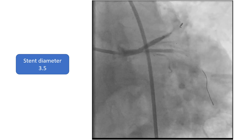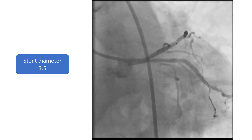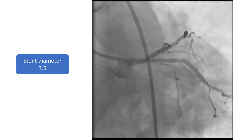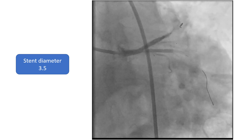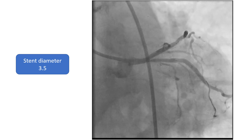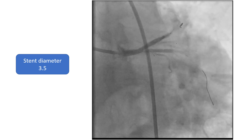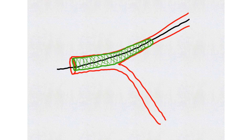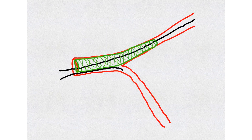Going back to the case, the stent diameter of 3.5 matched the LAD size, but it is clearly undersized for the left main stem. We need to do two things: since the left circumflex ostium is significantly pinched, recrossing and dilatation is needed; and post-dilatation of the proximal stent is needed to match the size of the left main stem. Recrossing to the side branch with an under-expanded stent carries the risk of going beneath the strut, so if you are not sure, initial POT is important before recrossing.